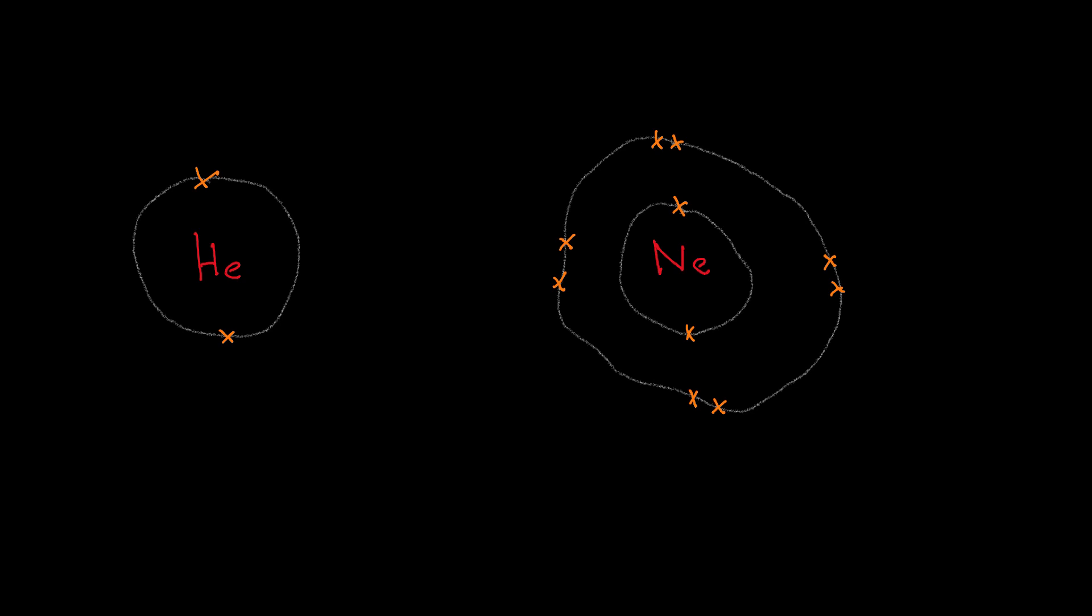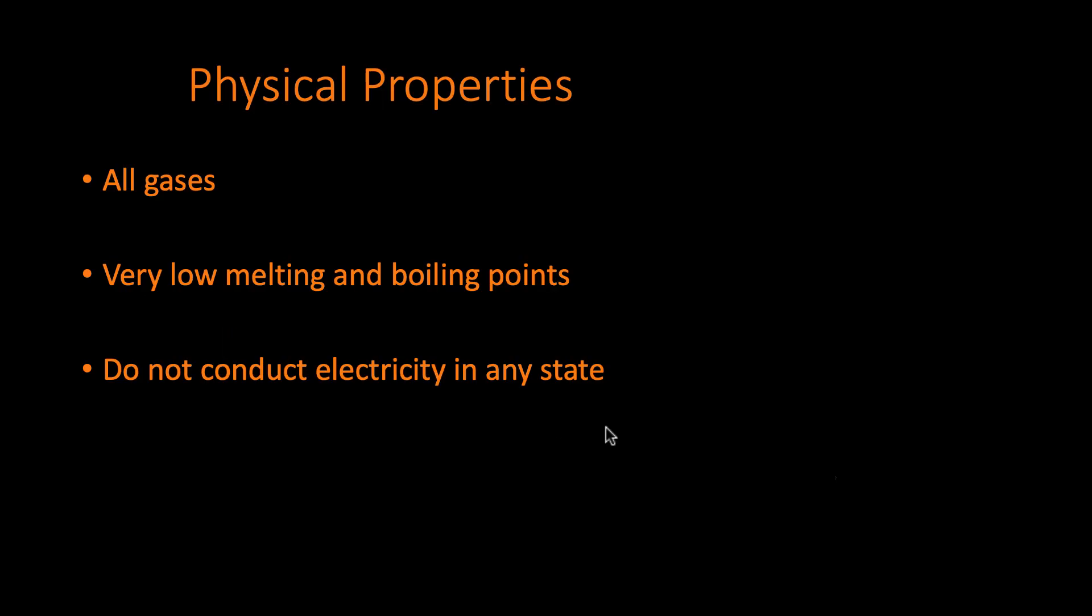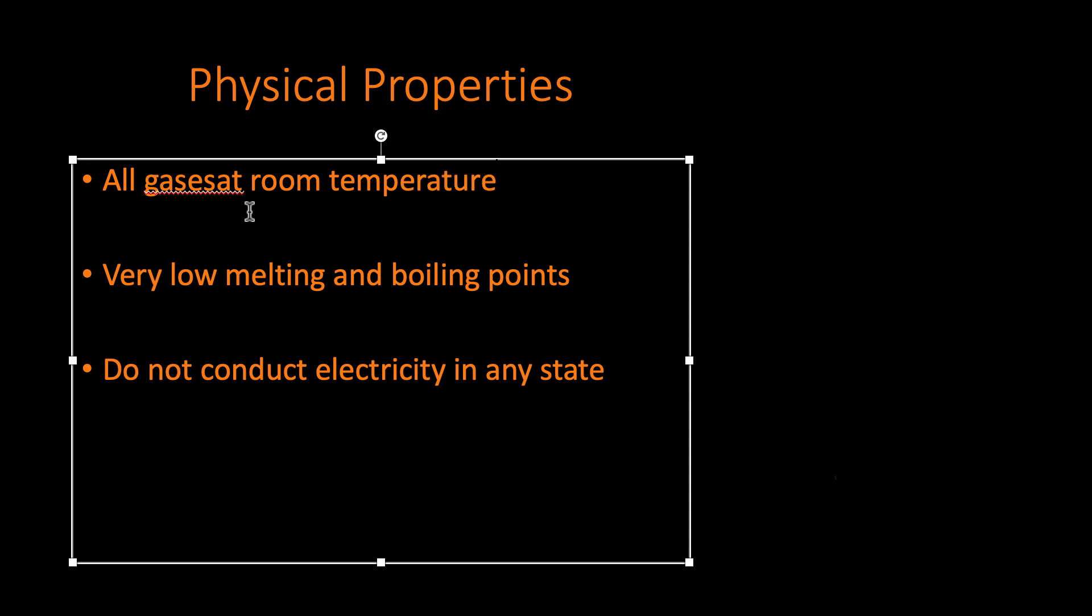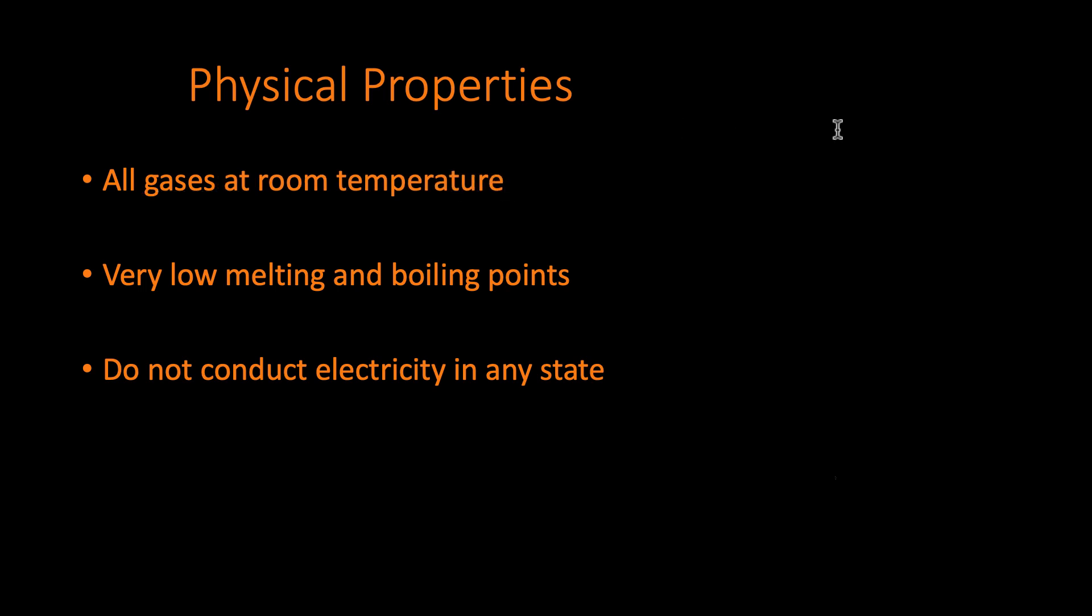So what does this mean for their physical properties? Well, physically these elements are all gases at room temperature, because they have very low melting and boiling points. But why do they have low melting and boiling points? Let's just actually draw one out. If I were to say a helium atom, I'm just going to draw it as this blob. It just exists as a single atom.